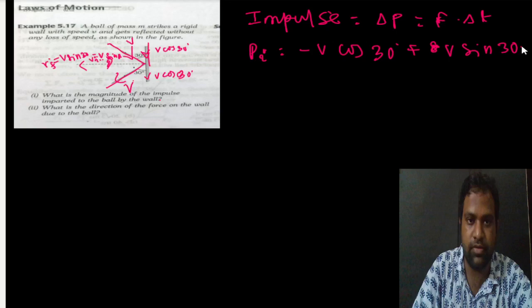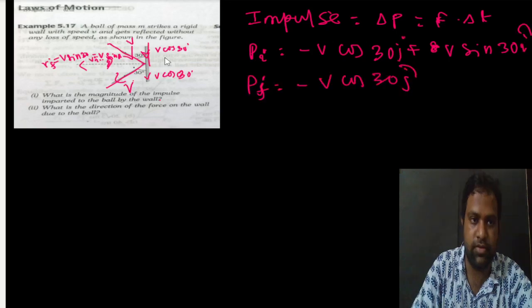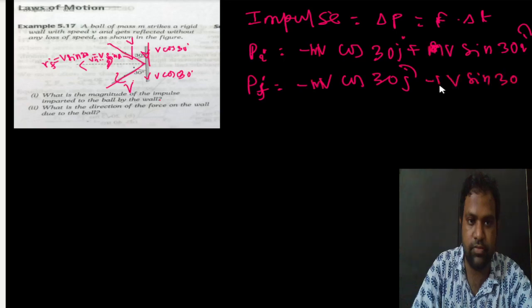The final momentum is M times minus V cos 30 i-cap, and the final y-component is minus V sin 30. So M will be there, and towards the negative direction the final momentum has both components accounted for.